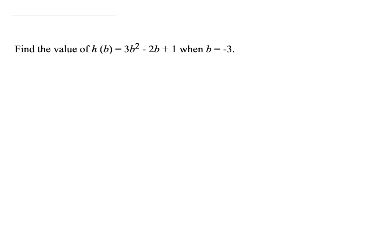In this problem, we have to find a value of h of b equals 3b squared minus 2b plus 1 when b has a value of negative 3. So h, my b is negative 3. So I have 3. Wherever you see b, we're going to replace it by its numerical value. Here, I have to square b, so I'm going to square 3 minus 2 times b, which is negative 3, and plus 1.